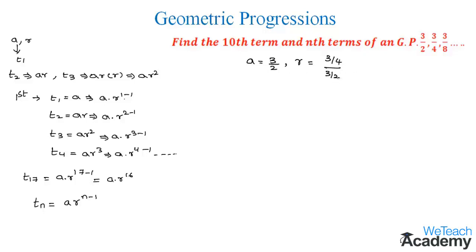The denominator term gets reciprocated, so we get 3/4 into 2/3. We can cancel the 3s in the numerator and denominator, and by simplifying we get 2 over 4, therefore the common ratio R is 1/2.